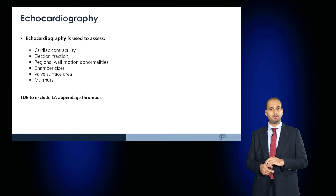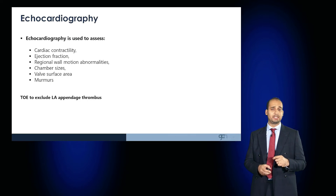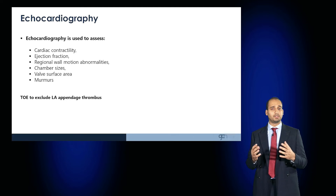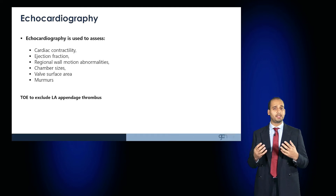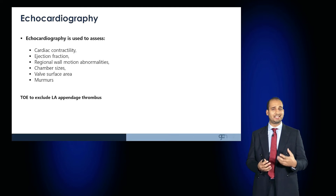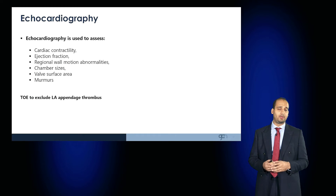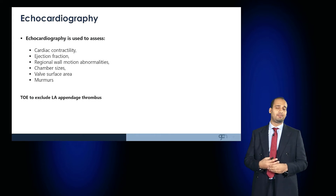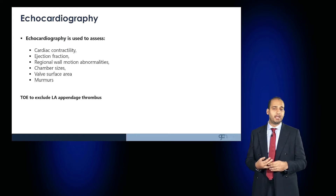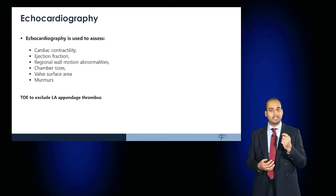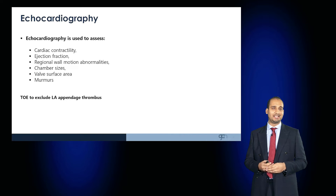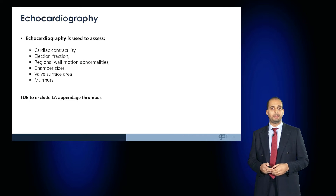An echocardiogram is important to determine the overall structure of the heart, cardiac contractility, and ejection fraction. The patient may also require a transoesophageal echo to exclude the development of a thrombus in the left atrial appendage.